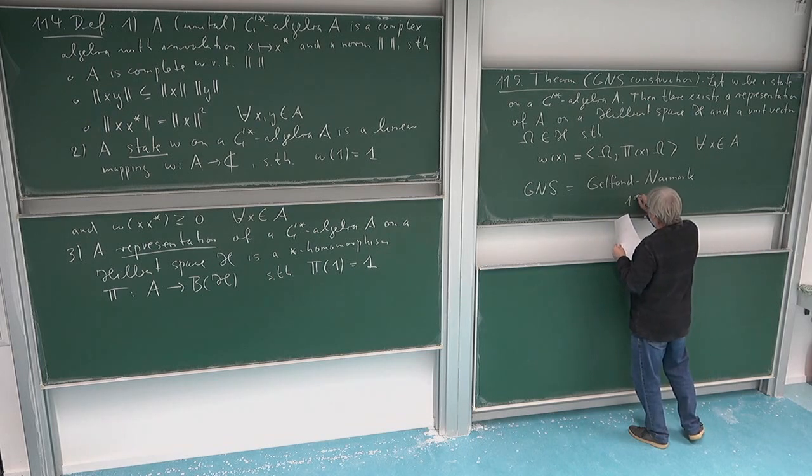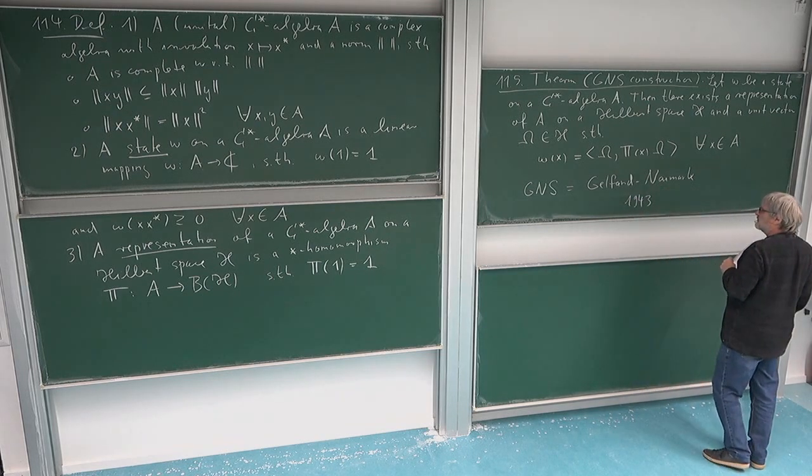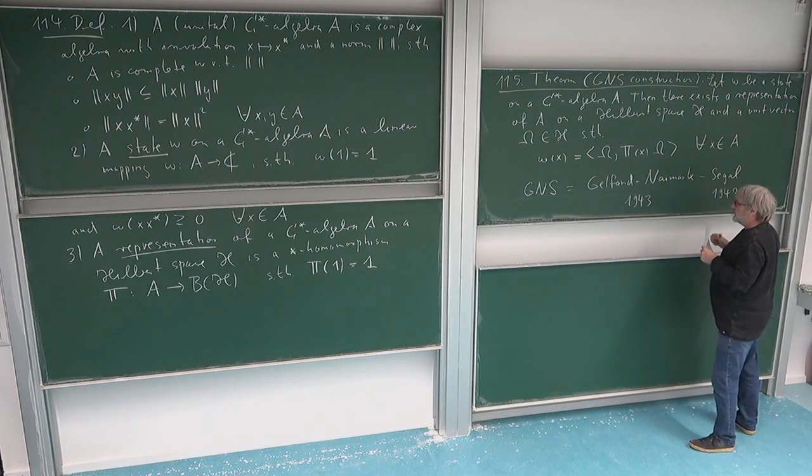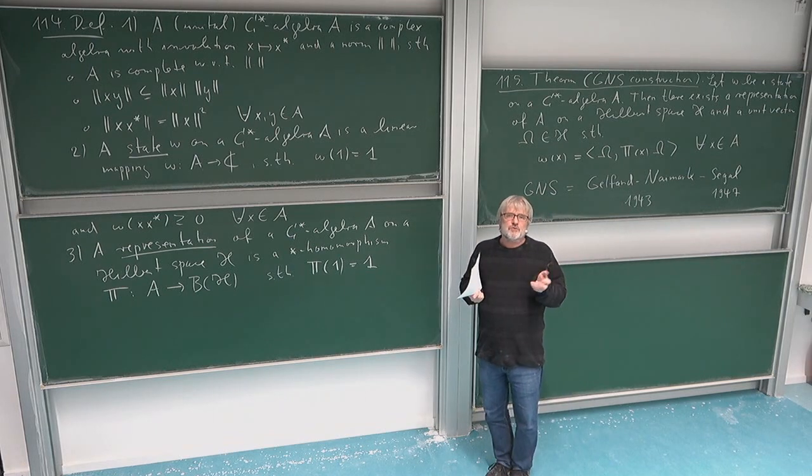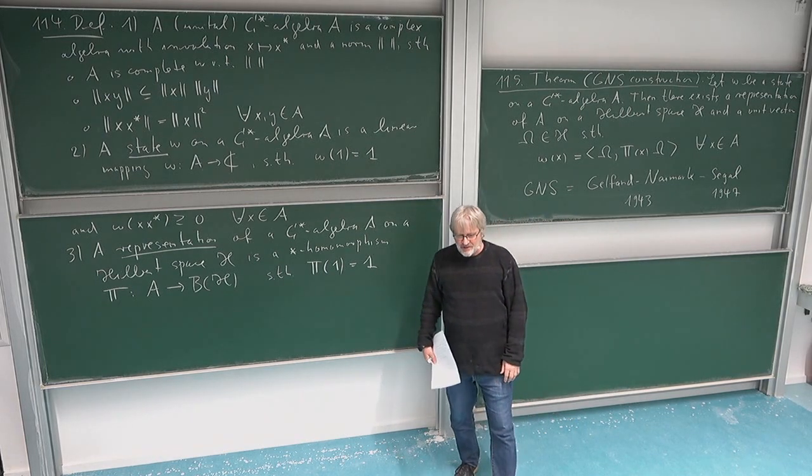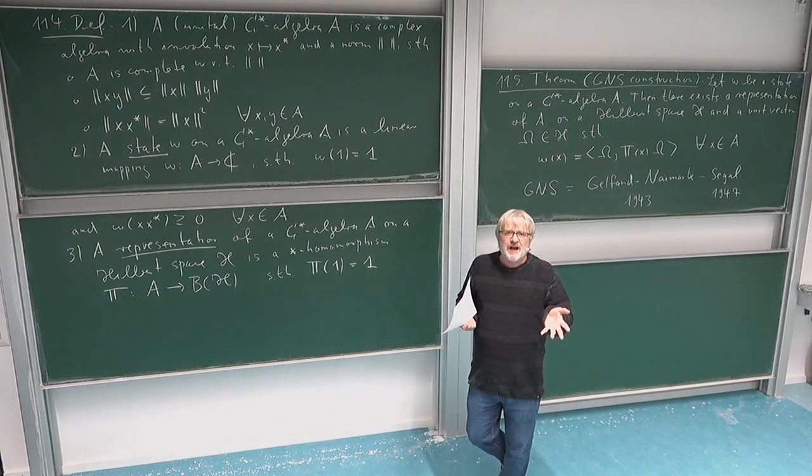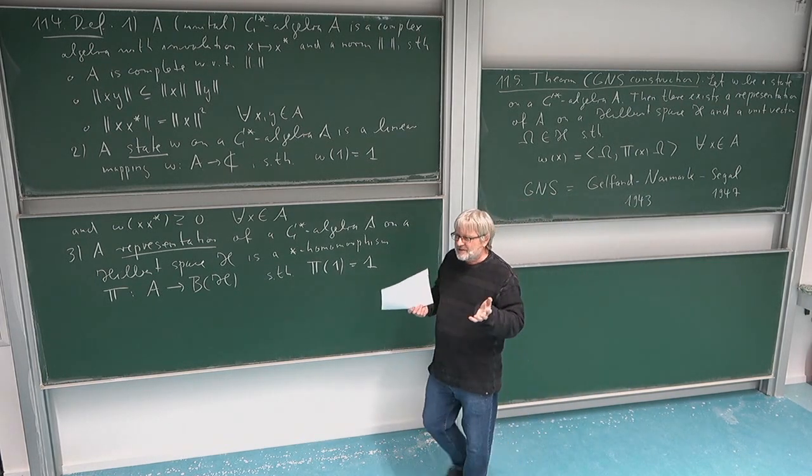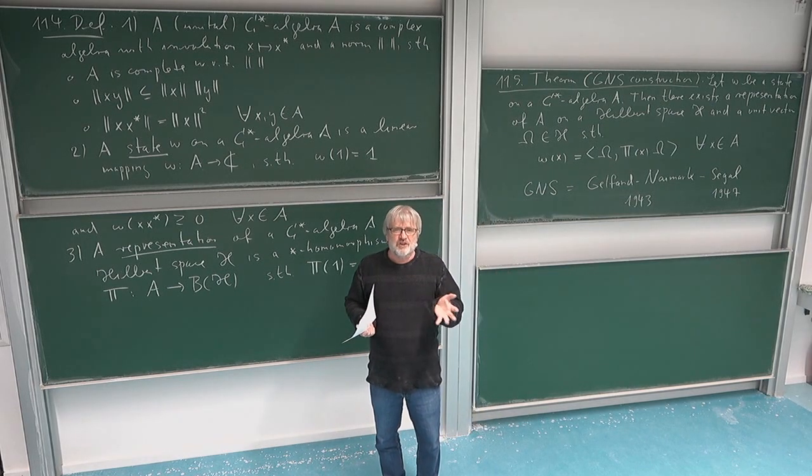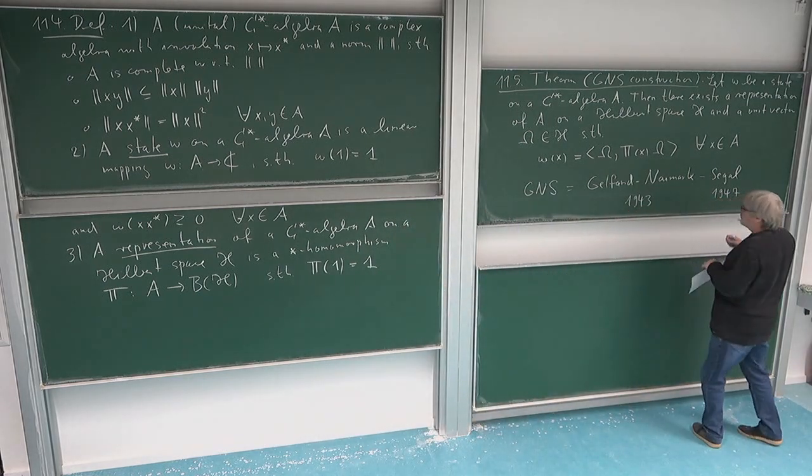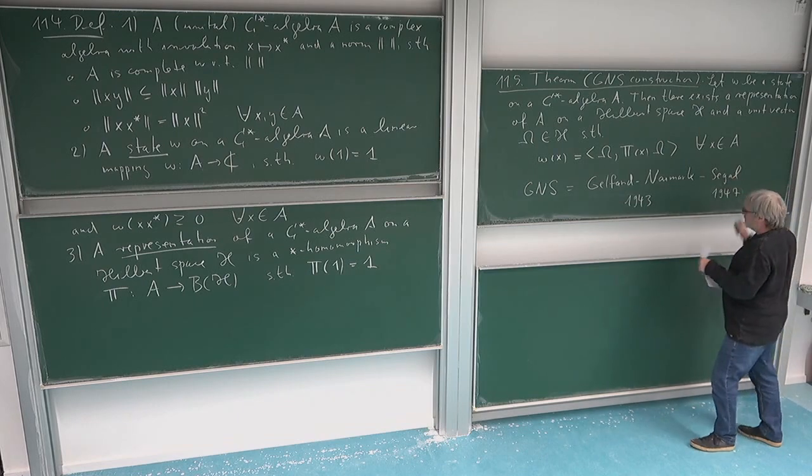And so this was maybe around 1943. So this was the birth of C-star algebras, and the S stands for Segal, who did maybe a more general version of this and in particular also promoted or started this point of view, which I hope I have conveyed to you in the last lectures, that actually, I mean, you should use this operator algebraic, the C-star algebraic language for talking about the basic operators and the basic canonical commutation relations in physics. So this kind of quantization ideas, they are very much related to Segal.